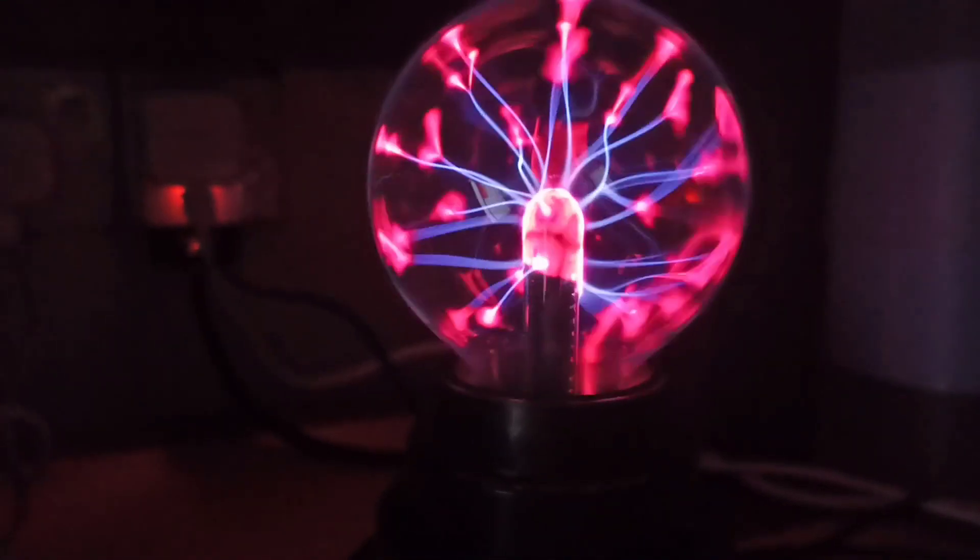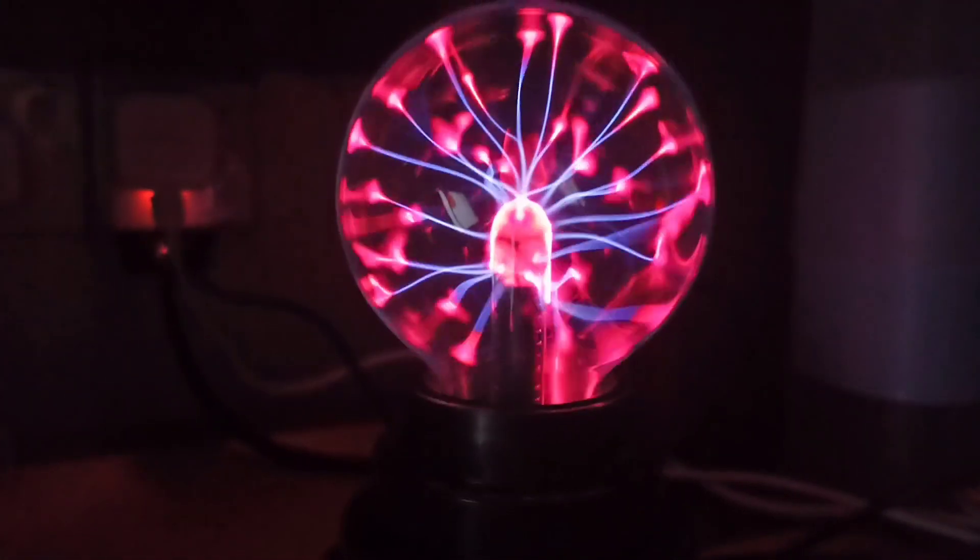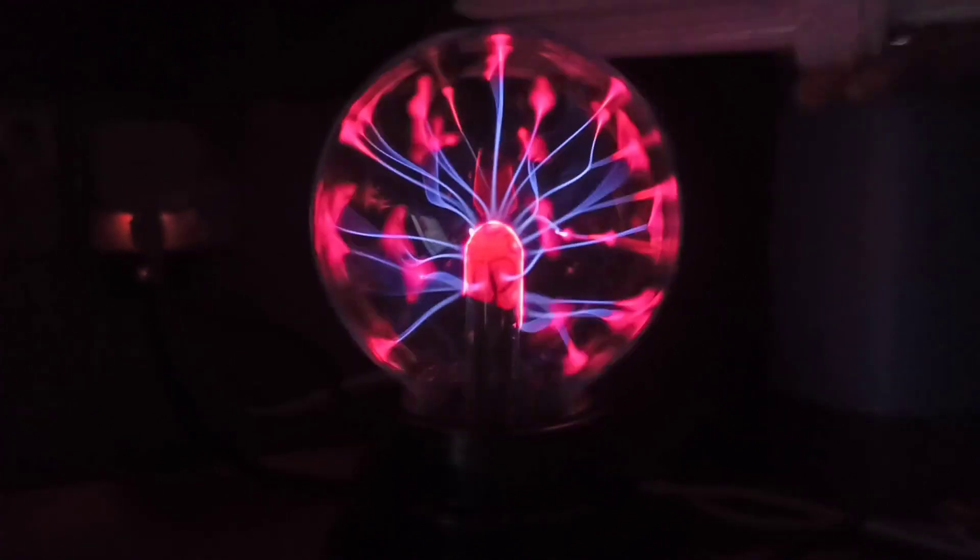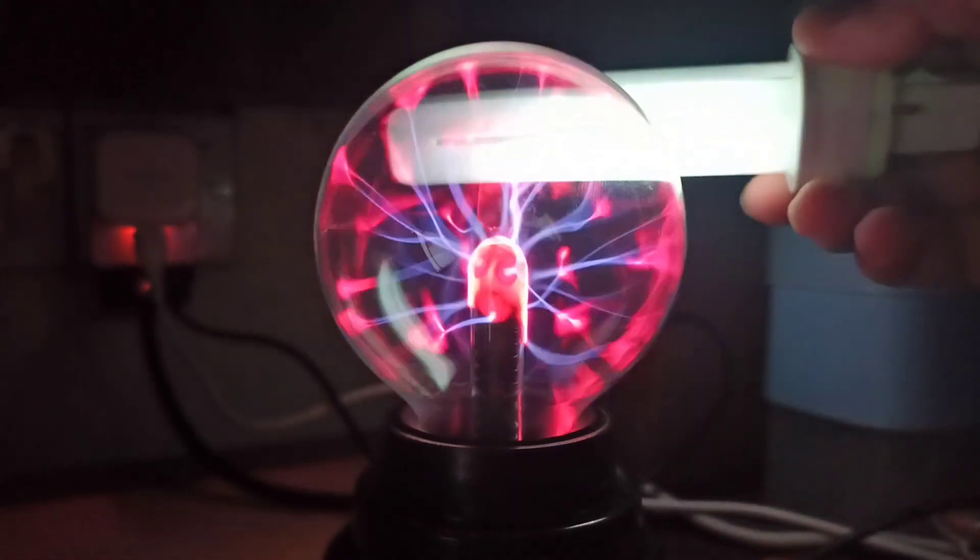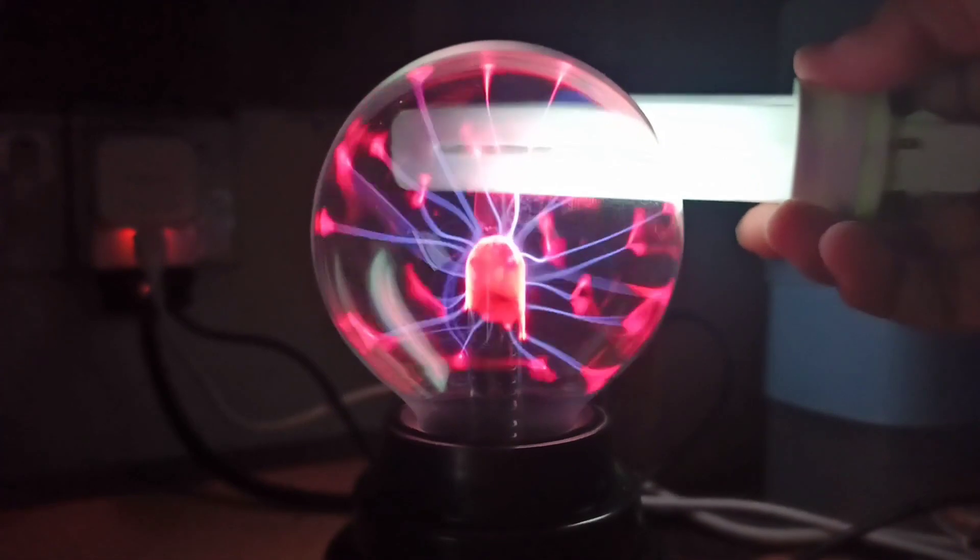For example, when I put this fluorescent light bulb nearby, it will glow, it will light up. So why is it happening like that?